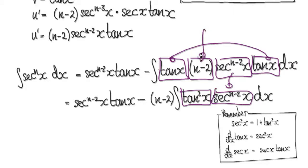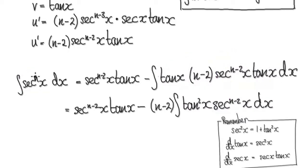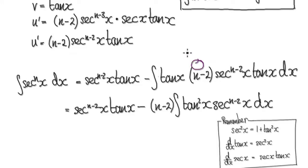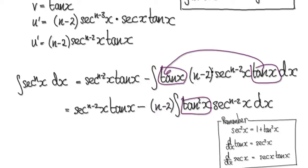Don't forget, n minus 2 is a constant — because if you're integrating secant to the power of 100x, then n is 100, so here you'd have 98. Since it's a constant, you can take it out. So merge these two together — that gives you this. This is a constant, so take it out, giving you this.